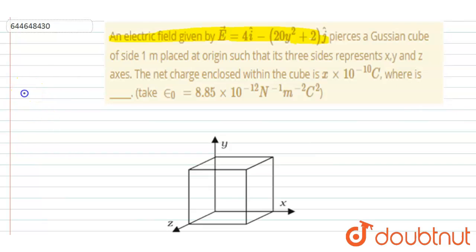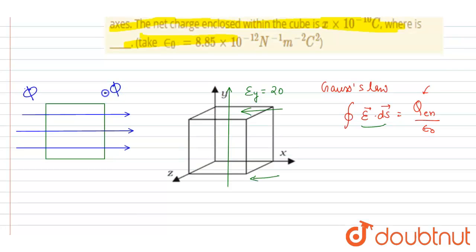And for this it will be minus a. So net flux because of constant electric field will be 0.